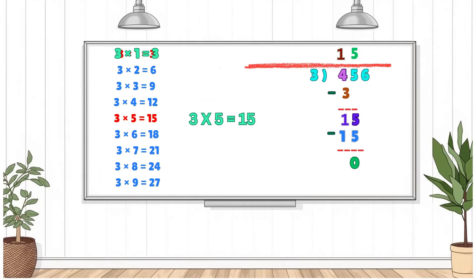Bring down the last digit, 6, to get 6. How many times does 3 fit into 6? It fits 2 times, 3 times 2 equals 6. Write 2 in the quotient, calculate 2 times 3 equals 6, and subtract. 6 minus 6 equals 0.